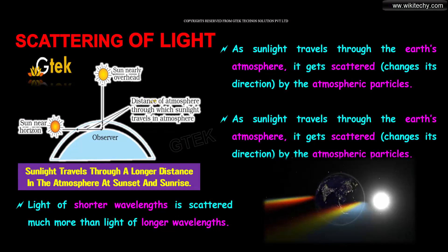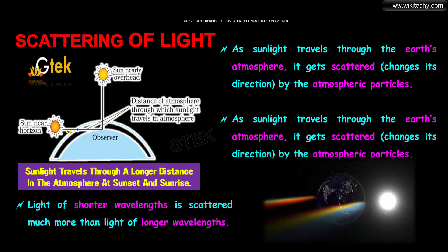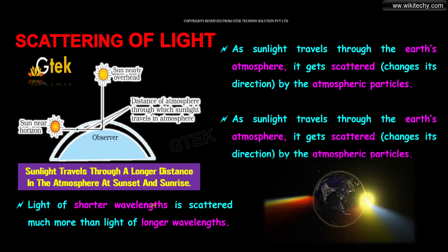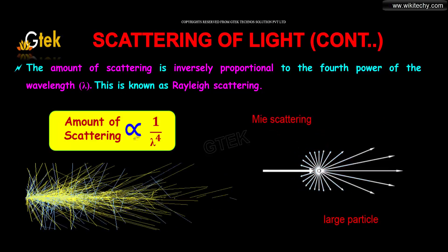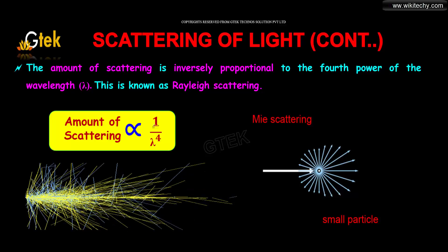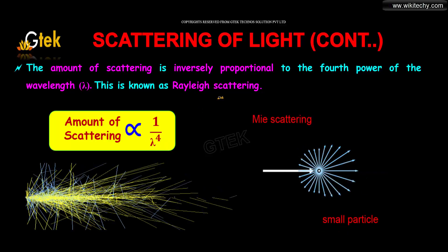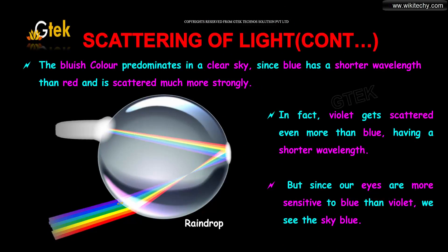As sunlight travels through the earth's atmosphere, it gets scattered by the atmospheric particles. The shorter wavelengths are scattered much more than the longer wavelengths. The amount of scattering is directly proportional to the fourth power of the wavelength. This is known as Rayleigh scattering. The bluish color predominates in a clear sky since blue has a shorter wavelength than red and is scattered much more strongly.